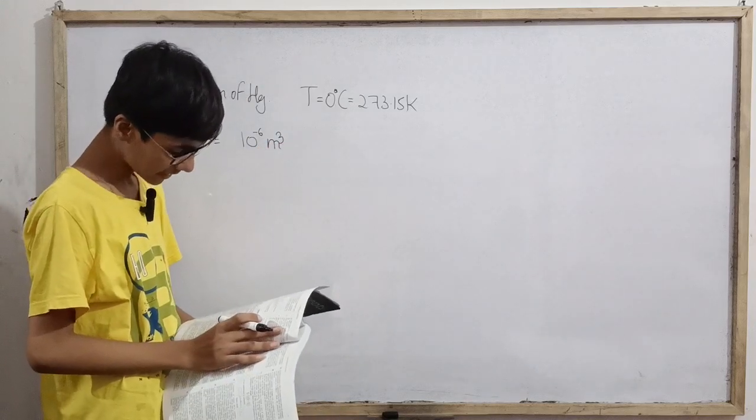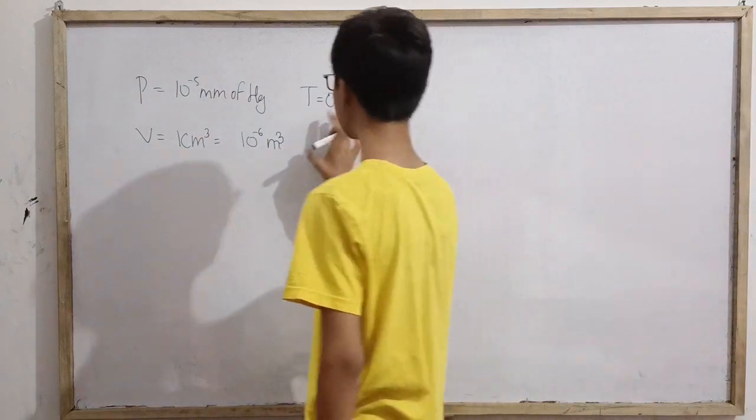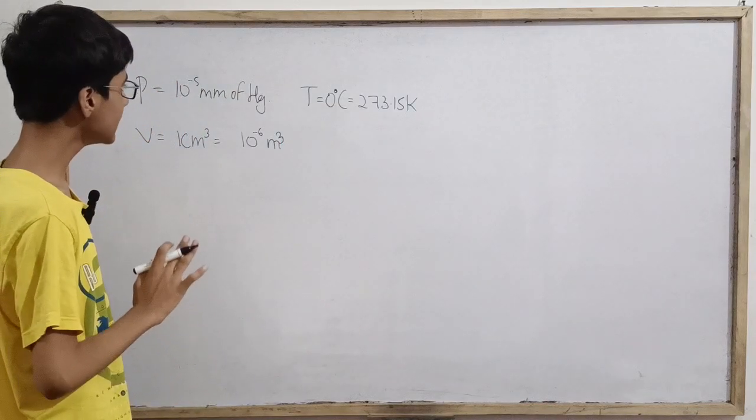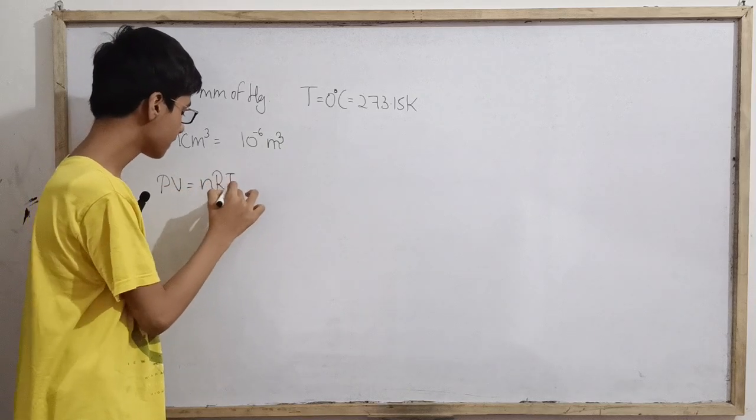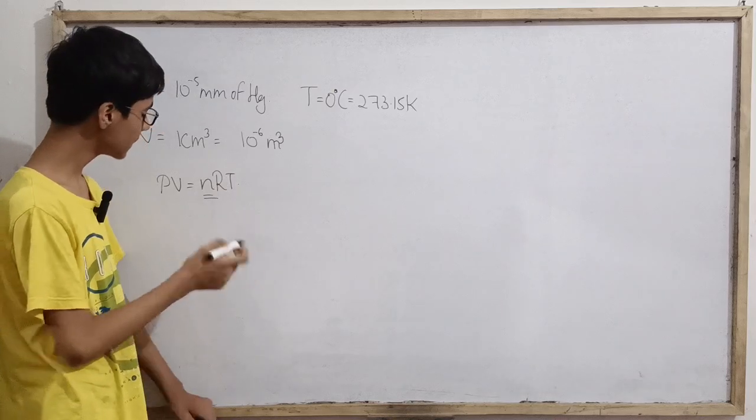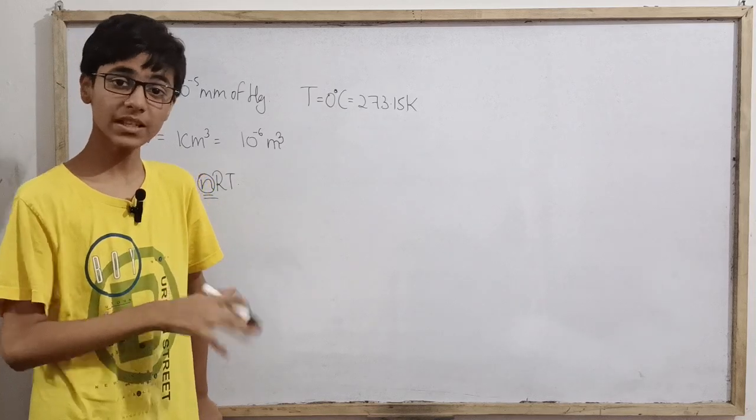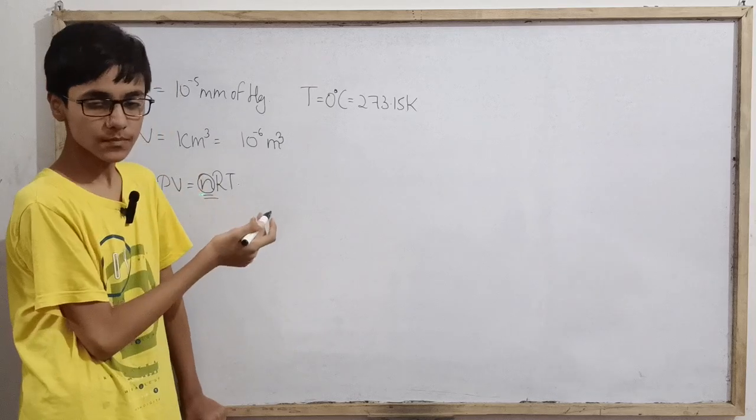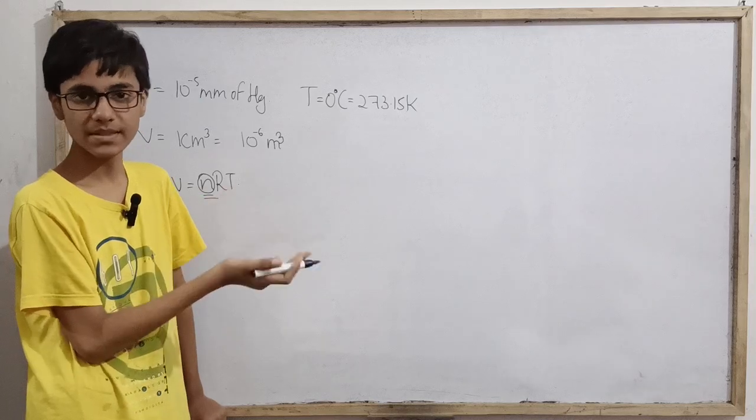So these three values are given: number of molecules in so much volume at this pressure and temperature. So here basically we can do PV equals nRT. We can get the gas constant, that is 8.314. We get small n, the number of moles. We don't need number of moles, but if we get number of moles, total number of molecules can be number of moles times Avogadro's number.